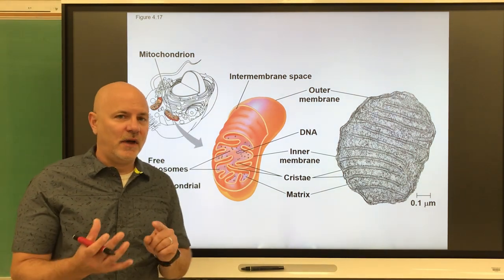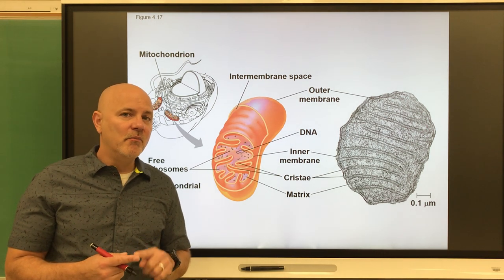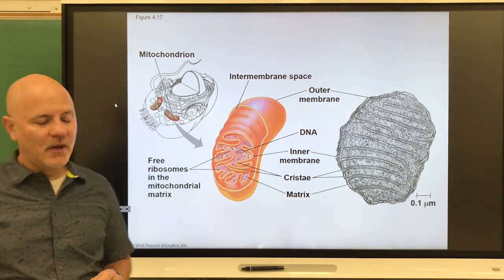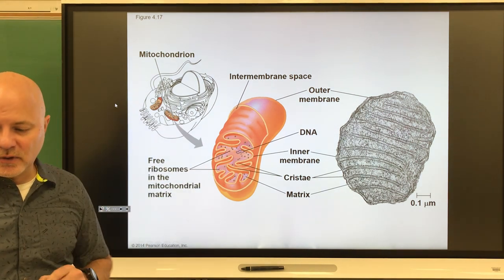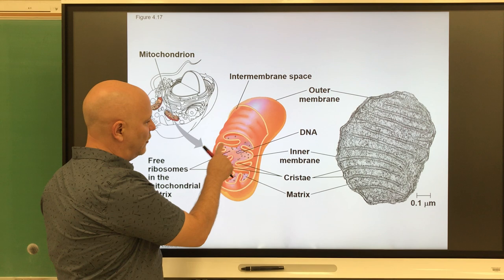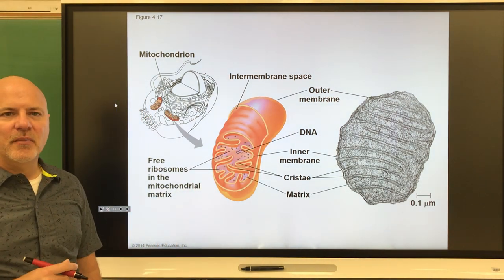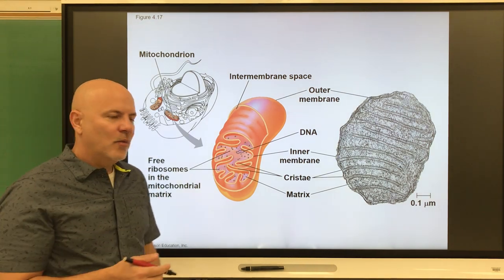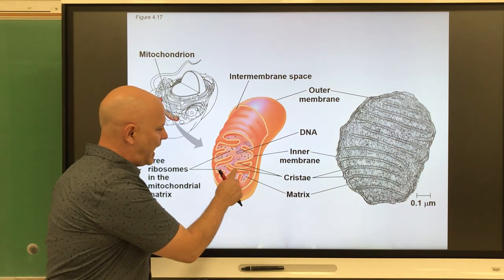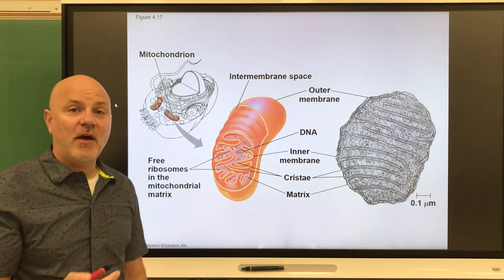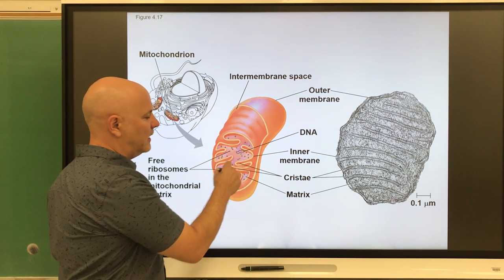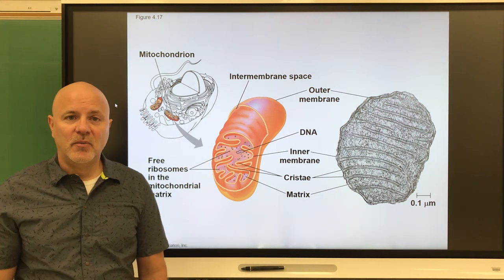Mitochondria are found in most Eukarya — all plants, all animals, all fungi, and most protists. Like chloroplasts, they are double-membraned. The inner membrane has many folds called cristae. More membrane means more enzymes, which means more chemical reactions — that is why mitochondria have that highly folded inner membrane, to increase the amount of chemical reactions that can occur there.